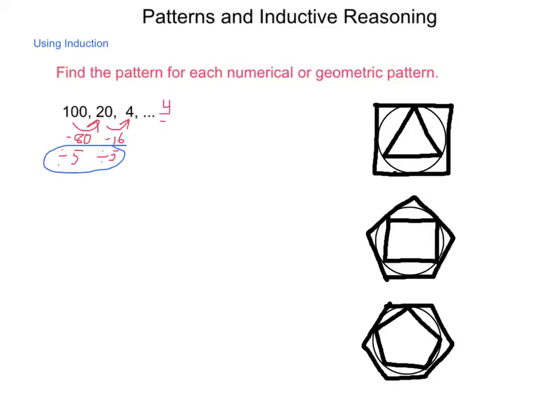Well, that is 4 fifths. That divided by 5 would be 4 twenty-fifths. And we'd be able to continue on because we made a conjecture based on the pattern that we saw.